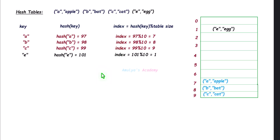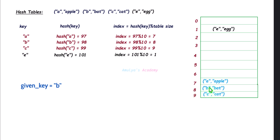For example, with a simple hash table, if I want to search the value associated with key B, first find its index — that is 8 — then go to that index and check whether that slot is empty or not. It is not empty, so check for its key and match it with the given key. If the match is successful, return its associated value.